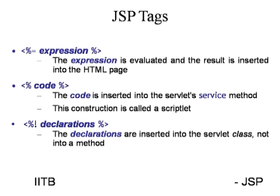If you want to directly post Java code in your JSP, you have to use a special tag. We have three special tags for using Java code. The first one is an expression. If you want to simply assign a variable or use simple variables in your JSP page, you use the expression tag with the percent-equals sign.